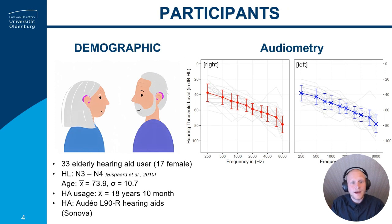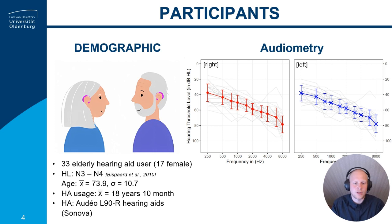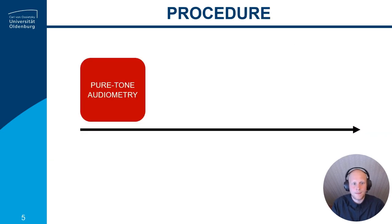We invited 33 elderly hearing aid users for a laboratory experiment with specific hearing profiles between N3 and N4, classified according to BISCAD. Previous consistent hearing aid usage was on average about 18 years. The test battery comprised a total of four tests.